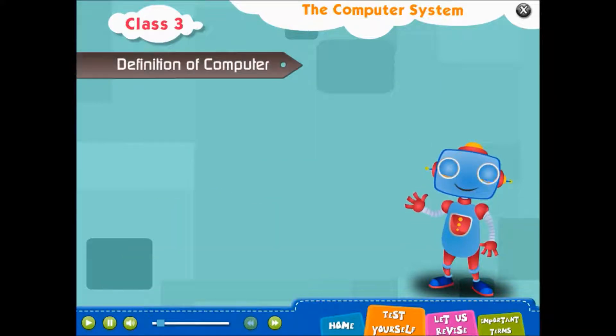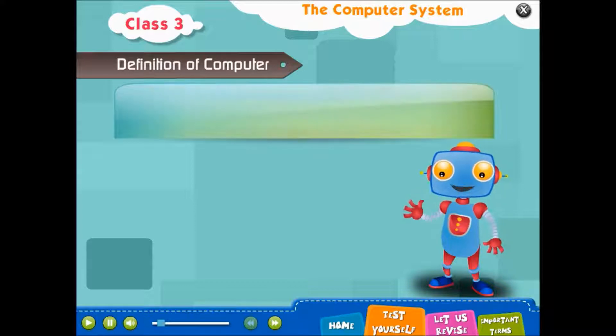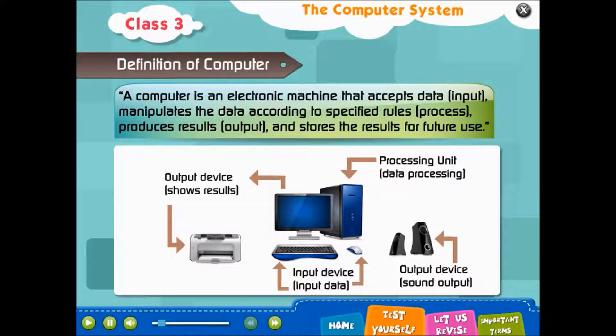Definition of computer. A computer is an electronic machine that accepts data, input, manipulates the data according to specified rules, process, produces results, output and stores the result for future use.